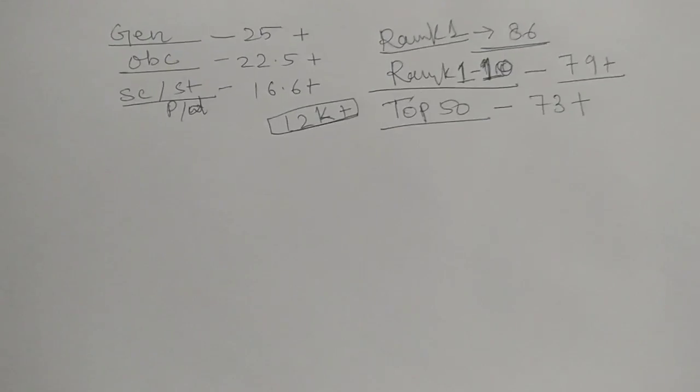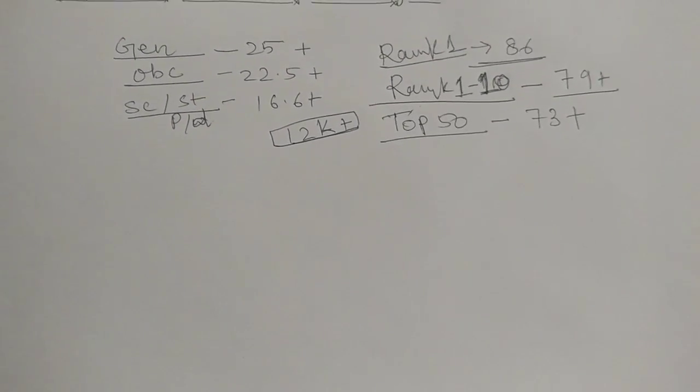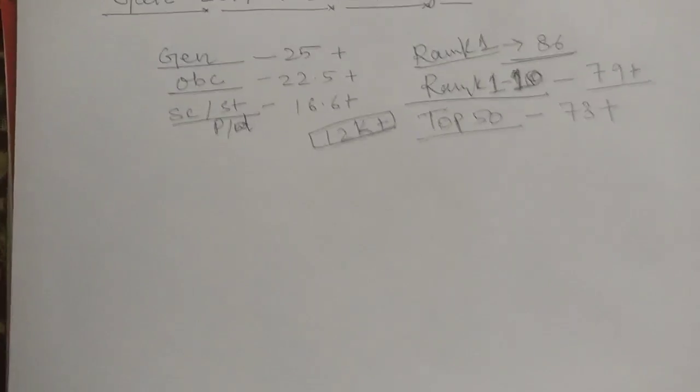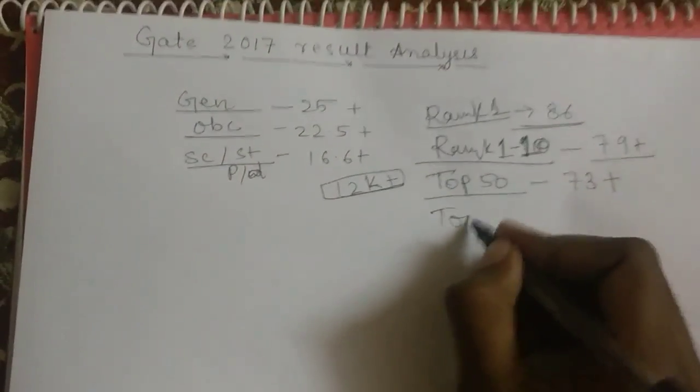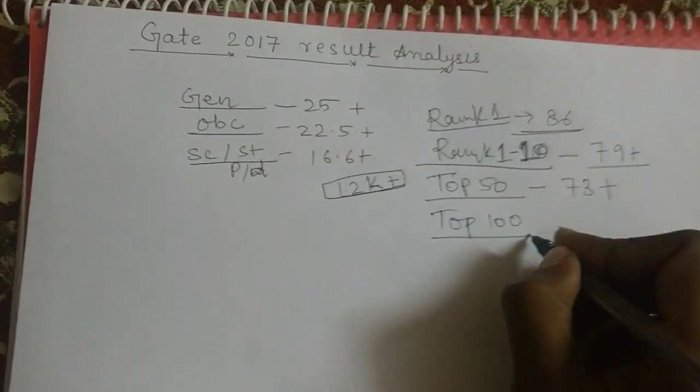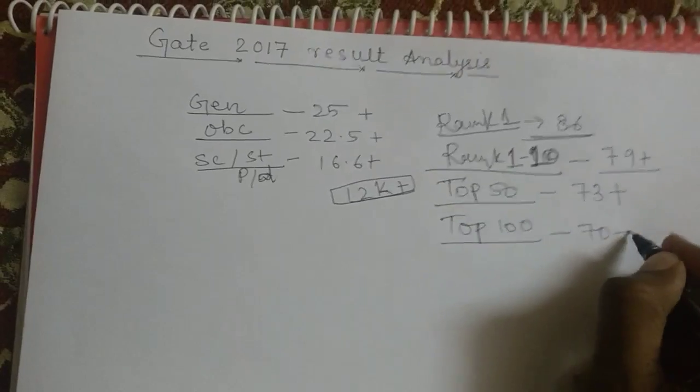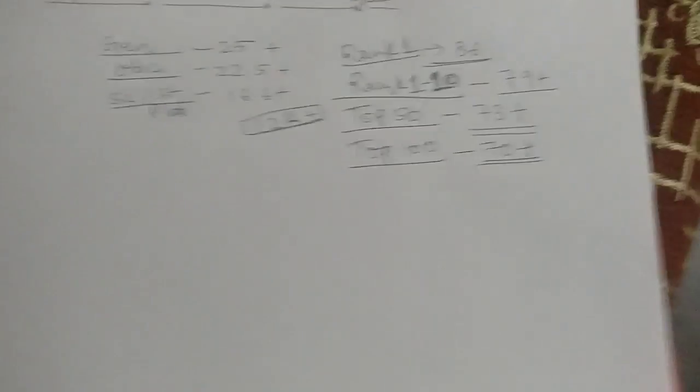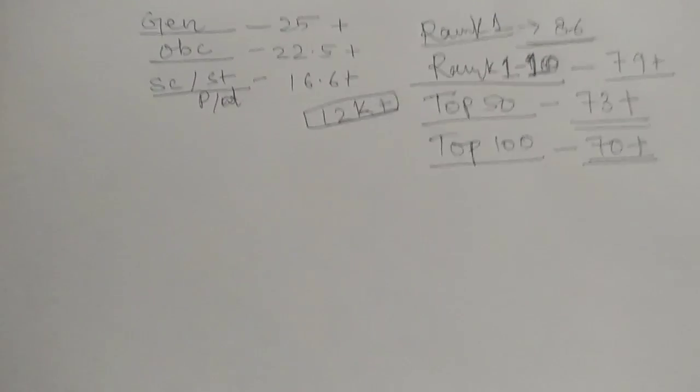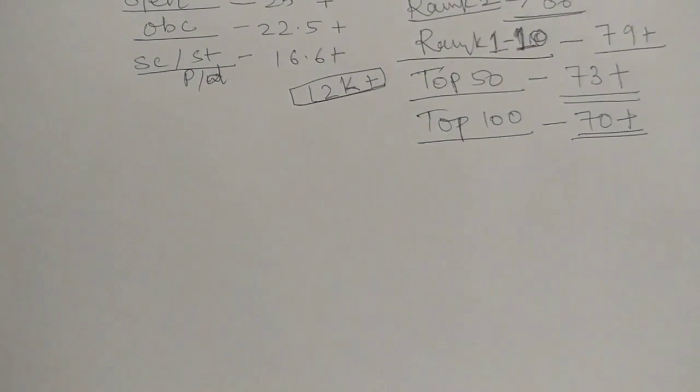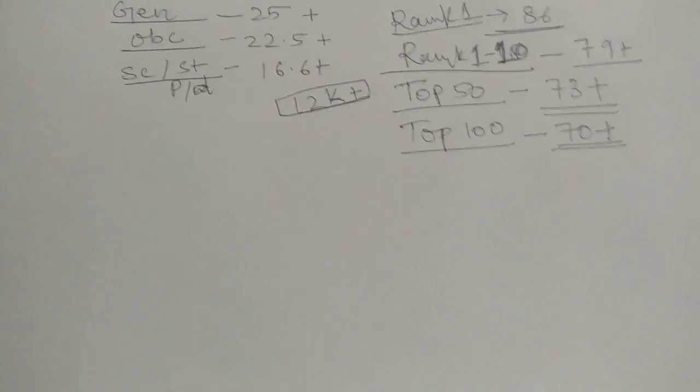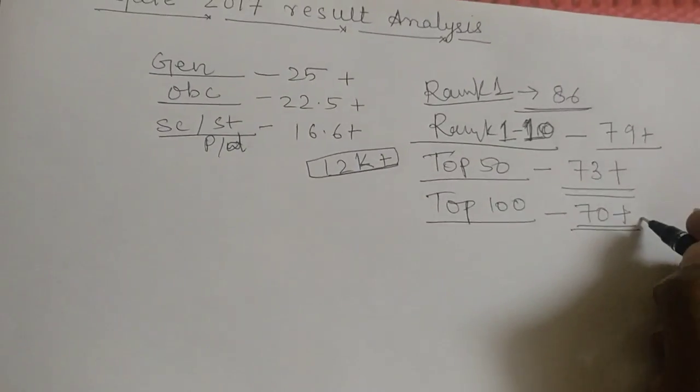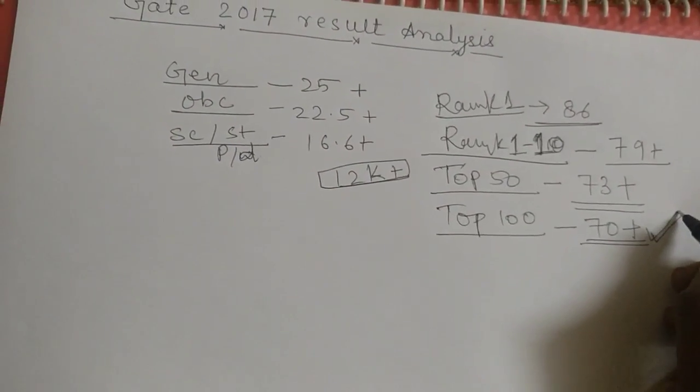As I talked to many toppers of this year computer science, the rank 100 was around, to get rank in top 100, the marks required was 70 plus. So, this year the cutoff for top 100 was little high. Actually, you need to get 70 marks to get top 100. At this rank you can get any of the colleges.